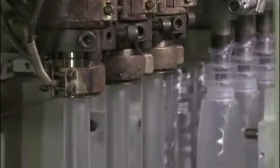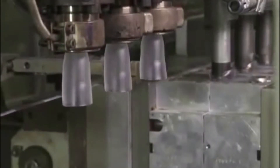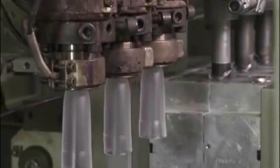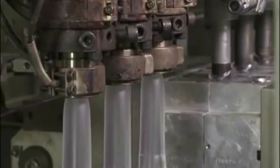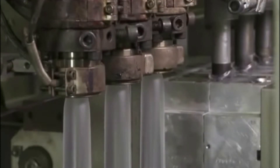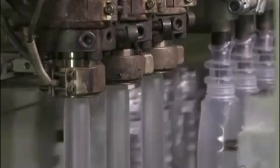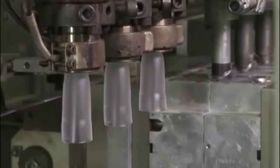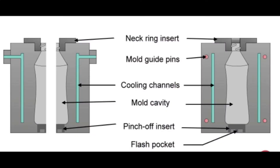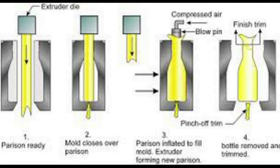In extrusion blow molding, the process starts with extruding plastic into a tube form. The required length is then captured in two halves of the mold, and with the blowing pin, air is blown into it to get the required shape. While blowing the air, the mold is cooled down by chilled water circulated through cooling channels in the mold.